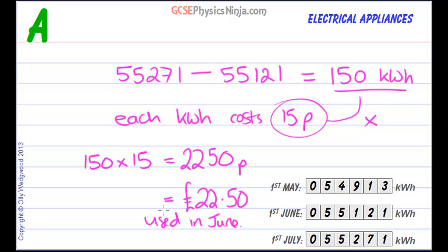So the electricity company will put that on their books and send you a bill for £22.50 for the electricity used in June.